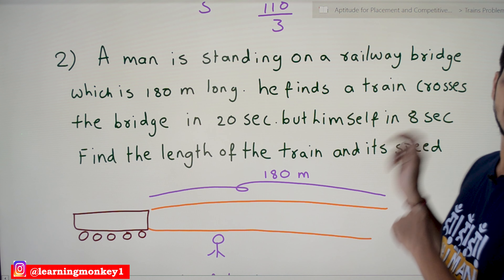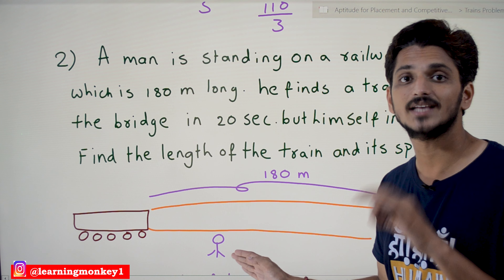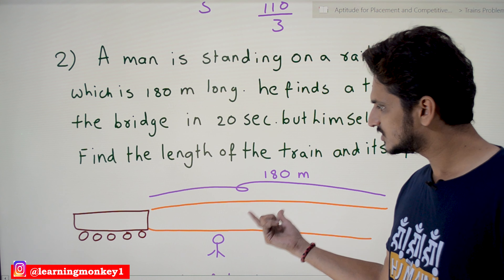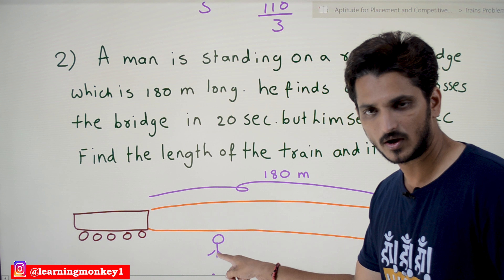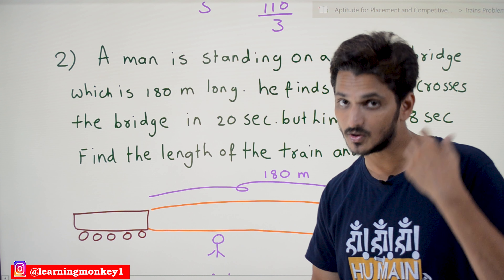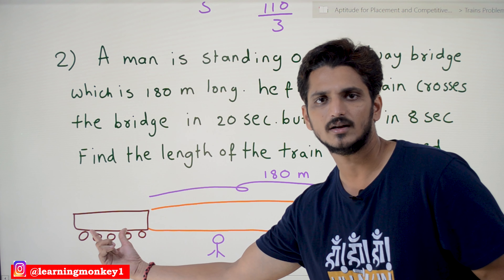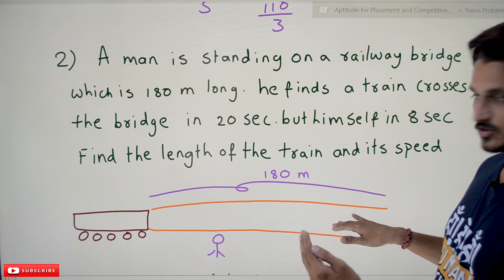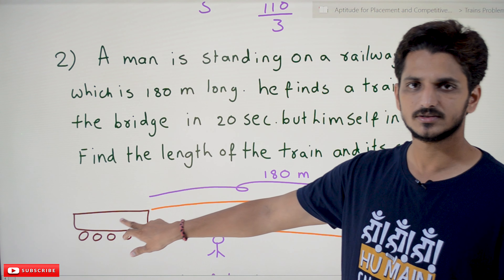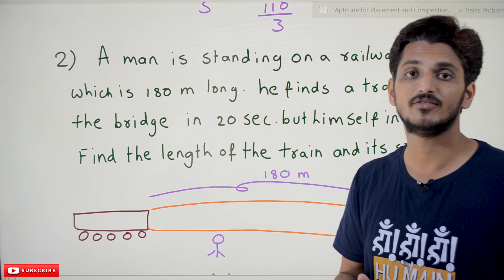But the train crossed the man himself in 8 seconds — it started, passed this man, and took 8 seconds. So the intuition from the basic formula: if the train wants to cross the bridge, the distance it must travel is the bridge distance plus the train distance. But if it wants to cross the man — a point object with zero length — it only needs to travel the train's length. Speed is the same in both cases.